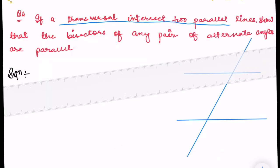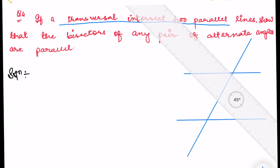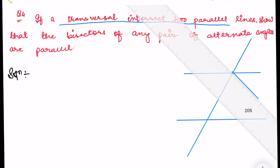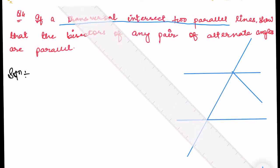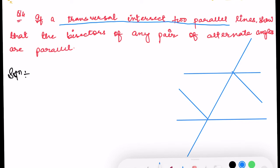Now let me take the bisector — let's say this one. Let us make it the bisector. Bisector meaning I am dividing the angle into two equal halves. Now this is the bisector. Let us write it down and let us name the points.